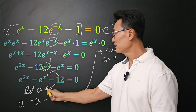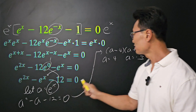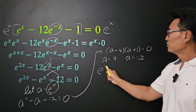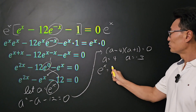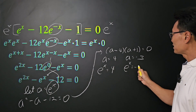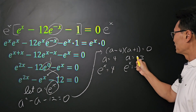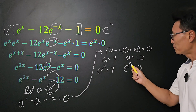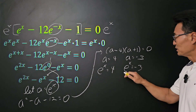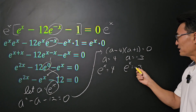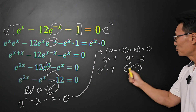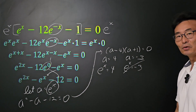Now it's time to go back and plug in e to the x for the a value that we have. So we have e to the x equals 4, and e to the x equals negative 3. Remember, whenever you have an exponential function, e to the anything power can never be a negative value. So this one we're going to ignore.